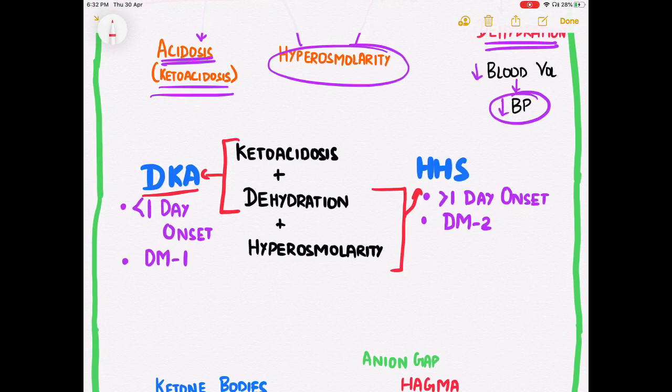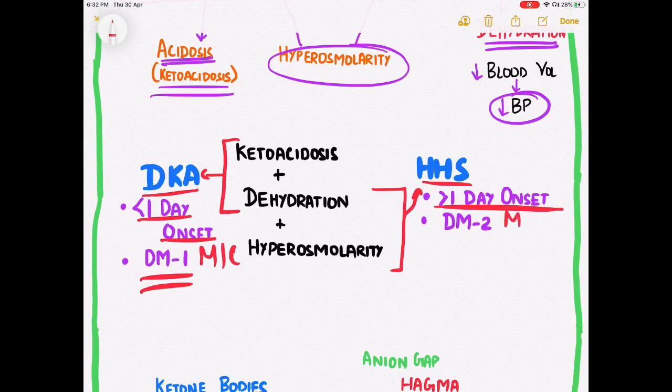DKA (diabetic ketoacidosis) is acute in onset and is more common in type 1 diabetes, whereas HHS is not acute in onset and is more common in type 2 diabetes. In the case of DKA, hyperosmolarity is variable, whereas in the case of HHS, hyperosmolarity is present in excess of 320 mOsm per liter.